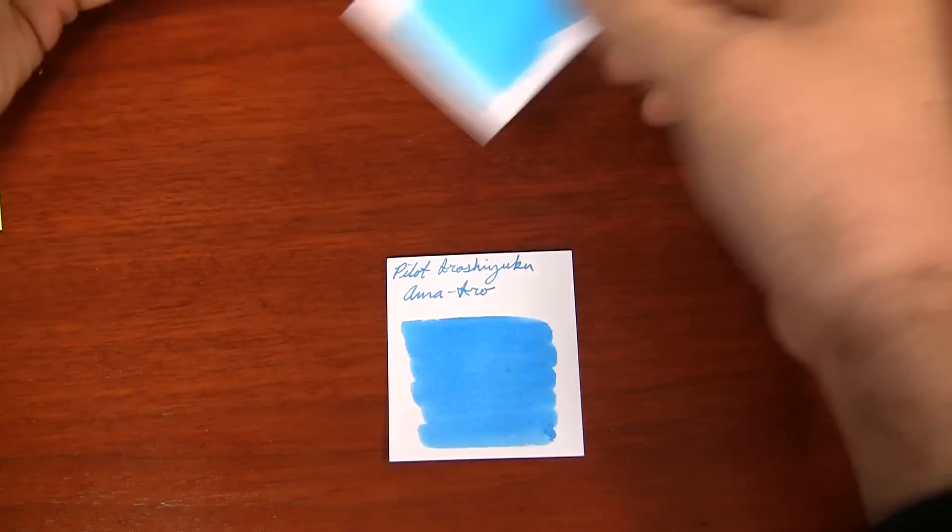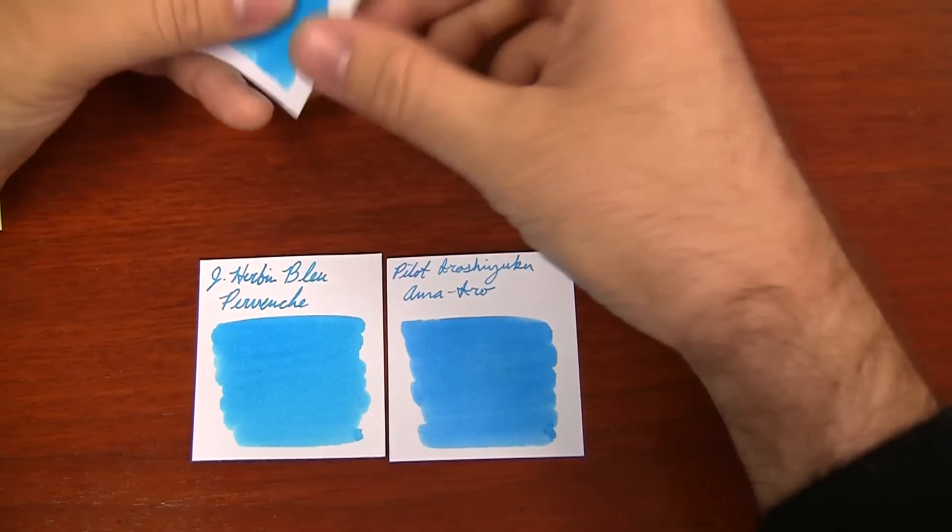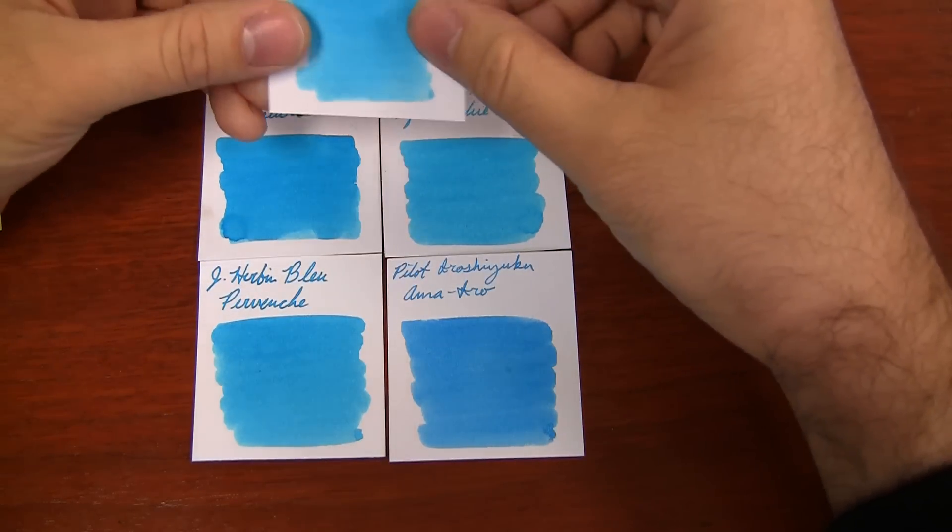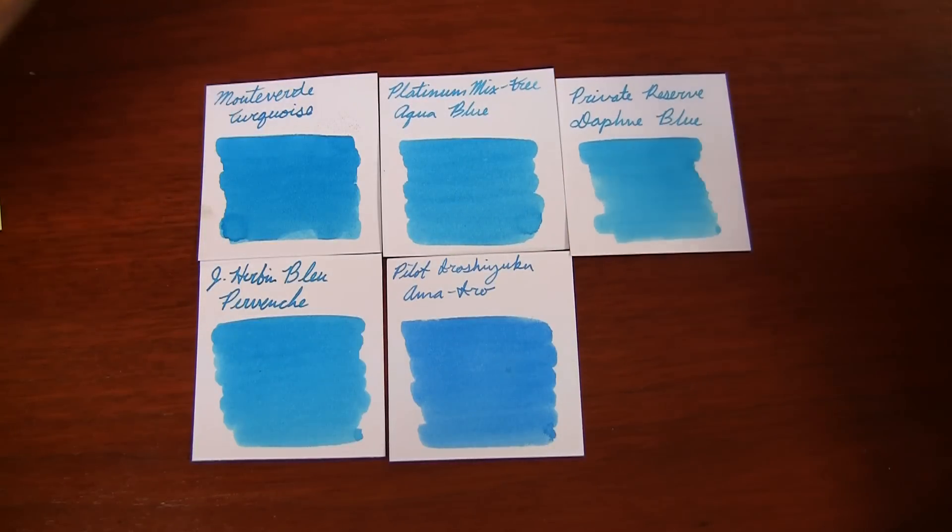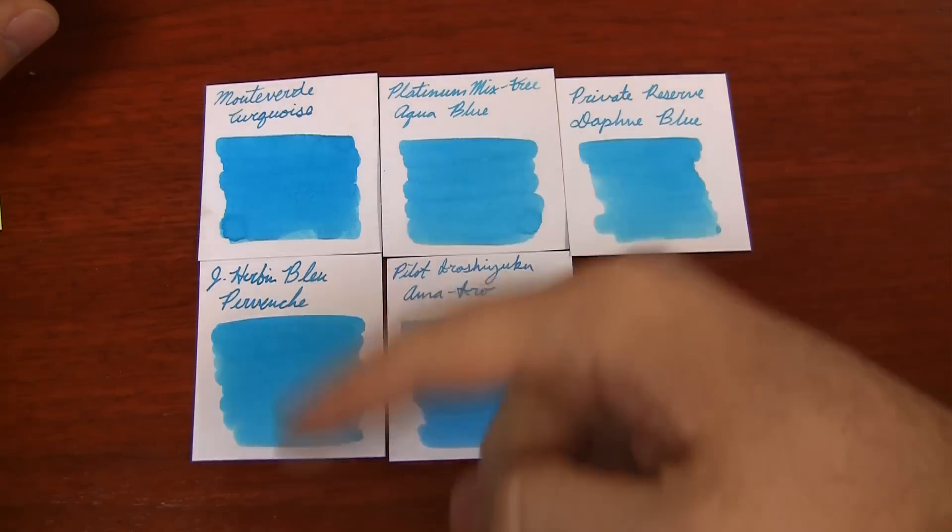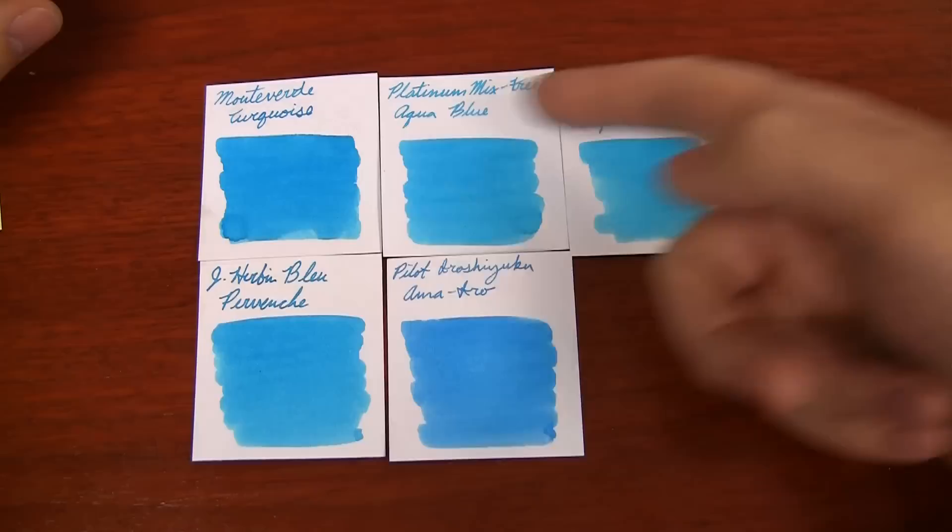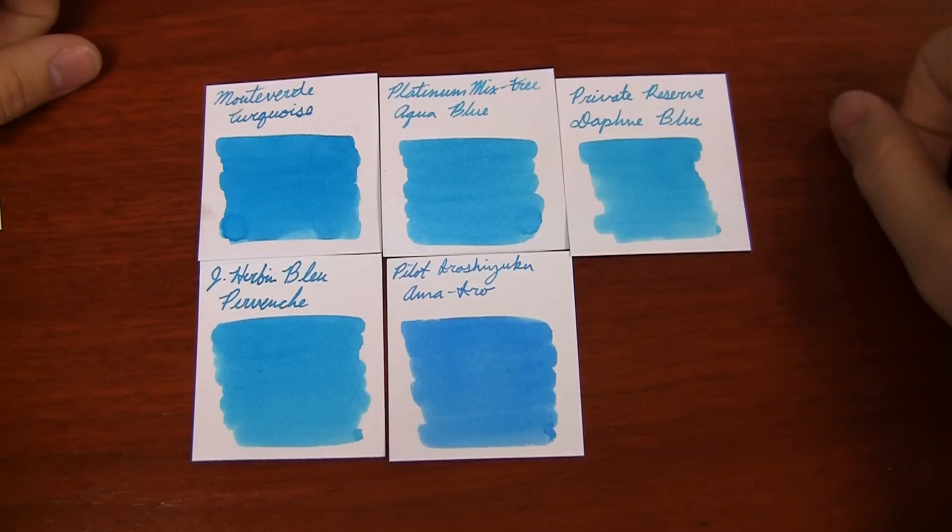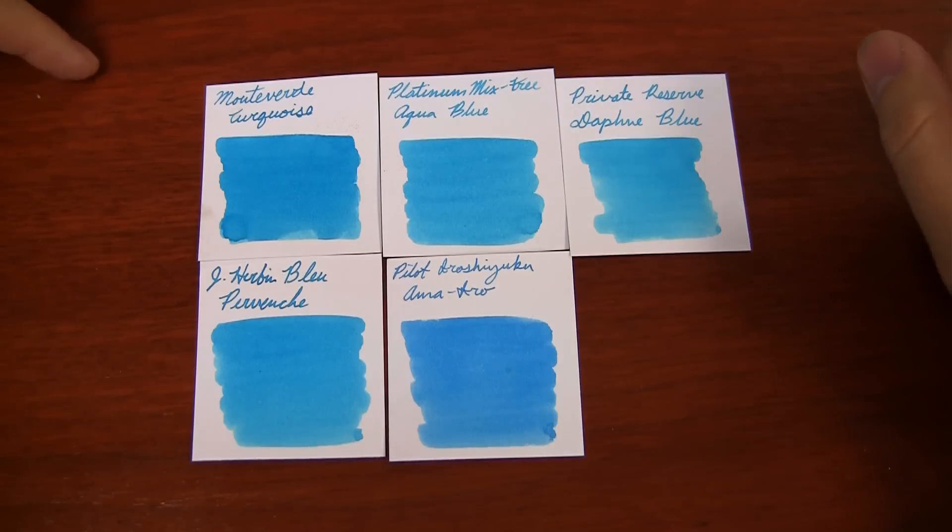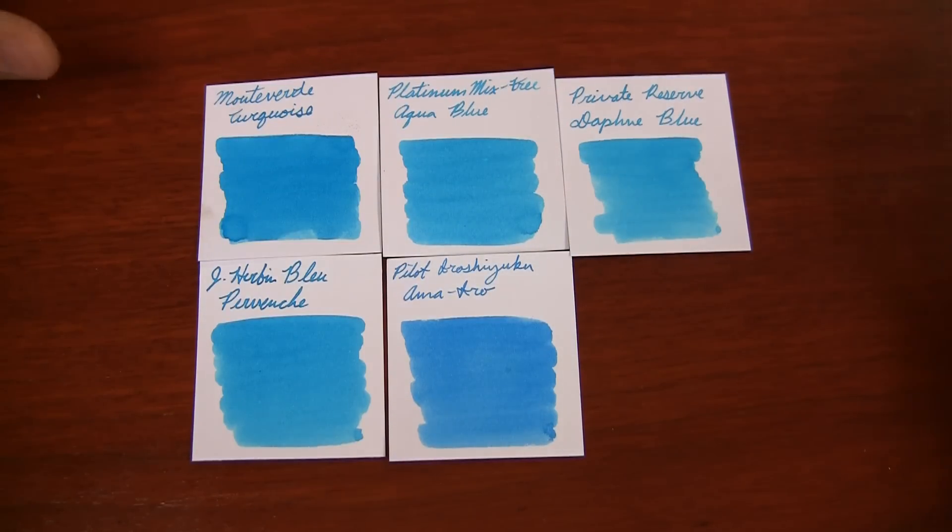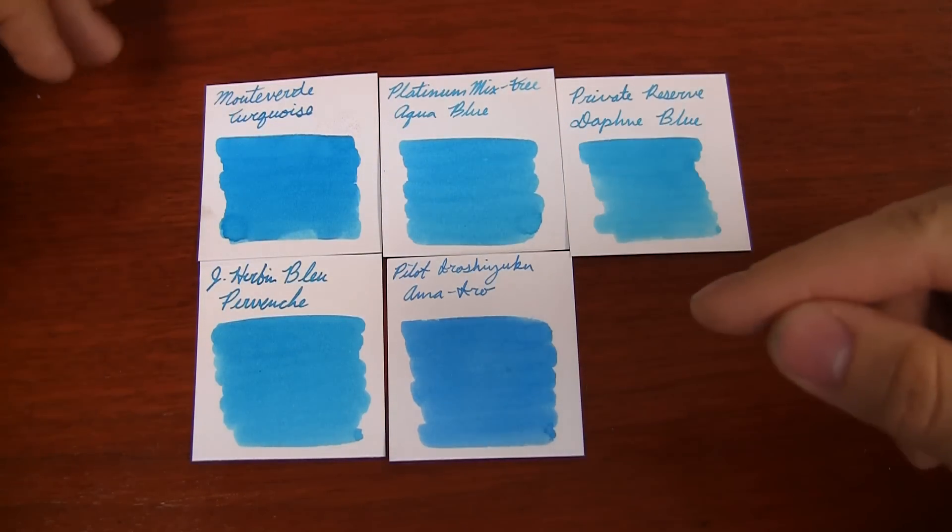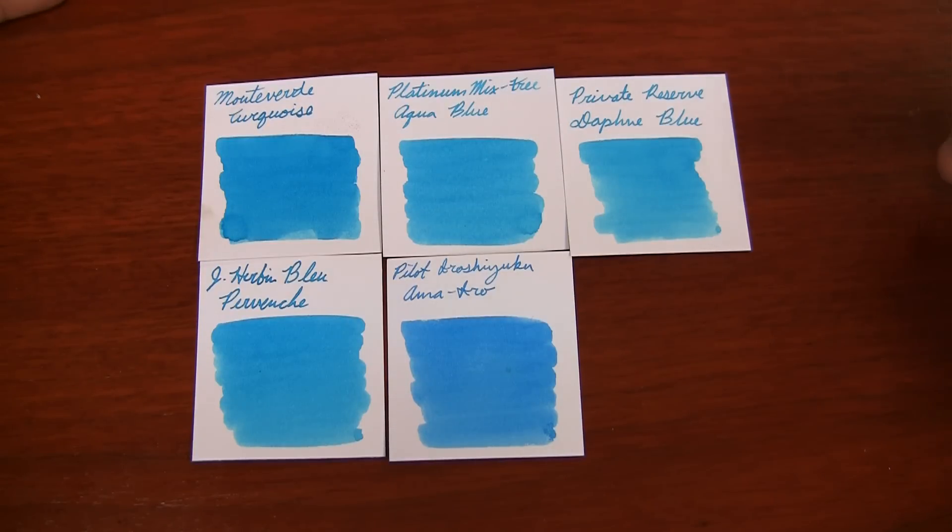And then just a couple more here, I told you I had a lot. J.R. Bond Blue Provence, Monteverde Turquoise, Platinum Mix Free Aqua Blue, and Private Reserve Daphne Blue. Again, different levels of saturation, but kind of a same turquoise, teal kind of vein as all the other ones are. Ama Iro, I tried to find one that was exactly like it, maybe I missed it, if so you can let me know in the comments. But it's really kind of the only true blue turquoise that I really found.